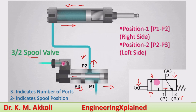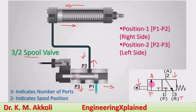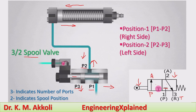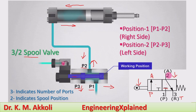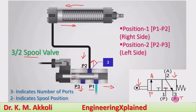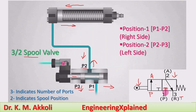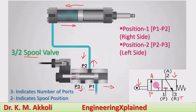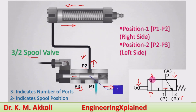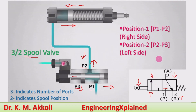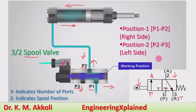In two positions, the pump is connecting to the actuator and the return line will be closed. During the return stroke, the actuator line port connects to the return port towards the tank, and the pump port will be closed. Like this, the 3 by 2 spool valve operates. Similarly, the operation will be there for the other different types of spool valves, which I am going to explain in further sessions.